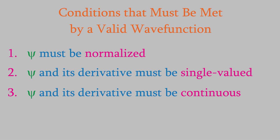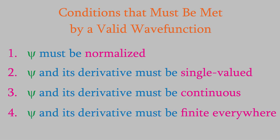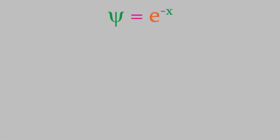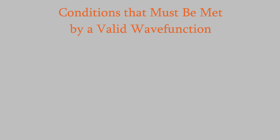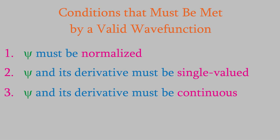Finally, the fourth condition is that the wave function and its derivative must be finite everywhere — the curve can never reach positive or negative infinity. For example, ψ = e^(−x) would not be valid because the wave function approaches infinity as x goes to negative infinity. To sum up, a valid wave function must be normalized, and both the wave function and its derivative must be single-valued, continuous, and finite everywhere.